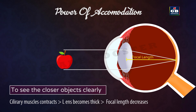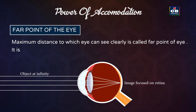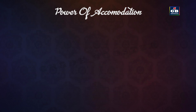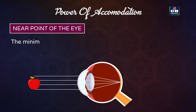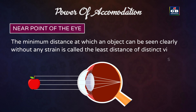Far point of the eye: the maximum distance to which one can see clearly is called the far point of the eye. It is infinity for a normal eye. Near point of the eye: the minimum distance at which an object can be seen clearly without any strain is called the least distance of distinct vision.